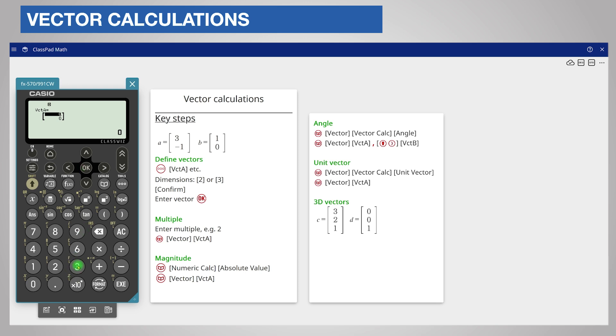Our vector is two dimensions so you can scroll down and confirm with OK. Enter the vector elements 3, pressing OK or the execute key, and negative 1. Try to use the negation key for negative numbers.